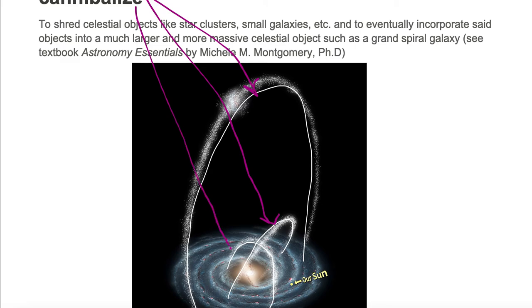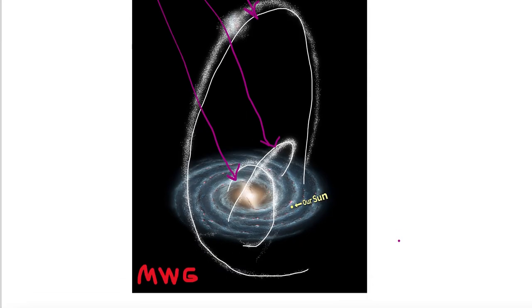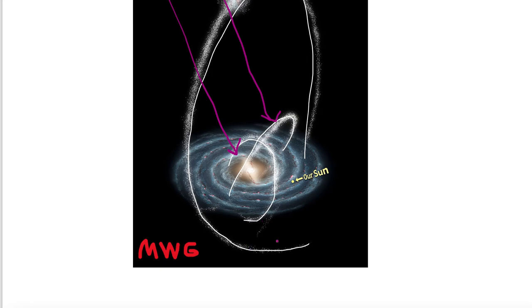Because the Milky Way galaxy is the larger and more massive object, any smaller object that comes gravitationally near this larger object will get tidally ripped apart or shredded. Eventually the shredded material will incorporate into the Milky Way galaxy.